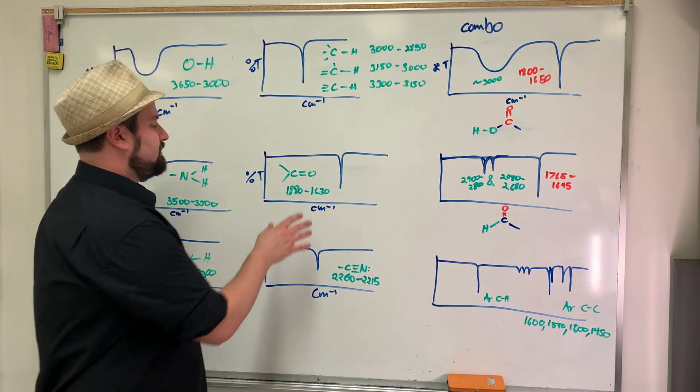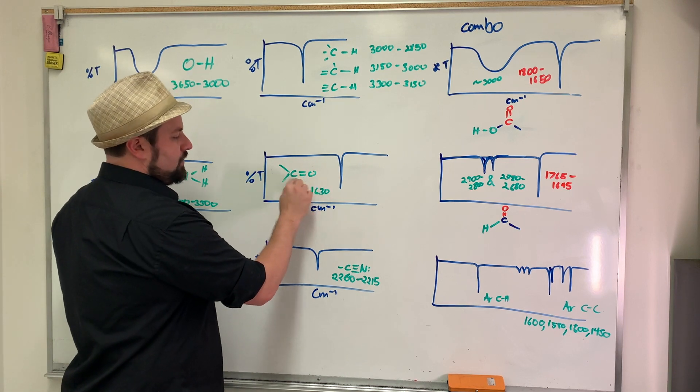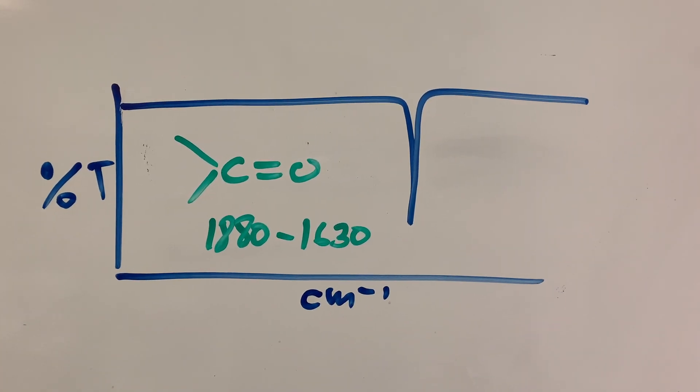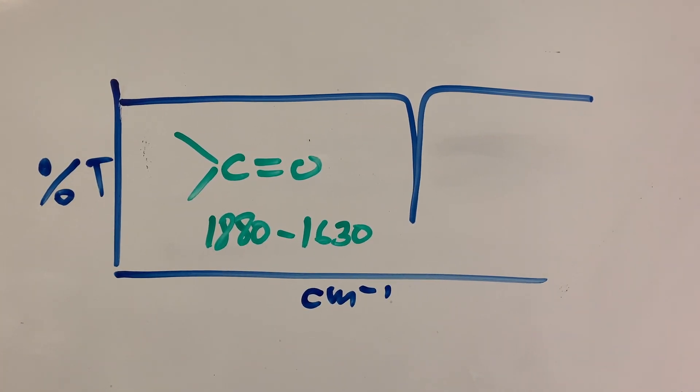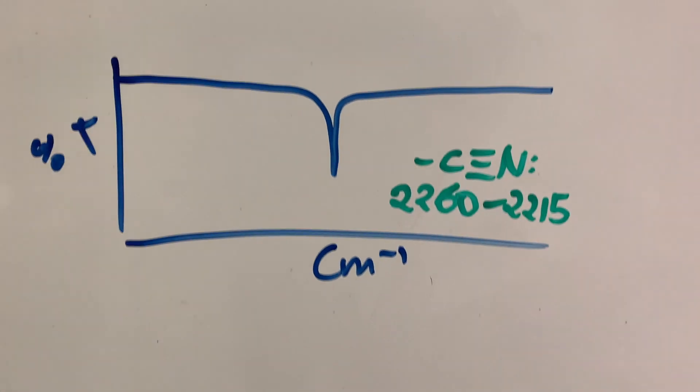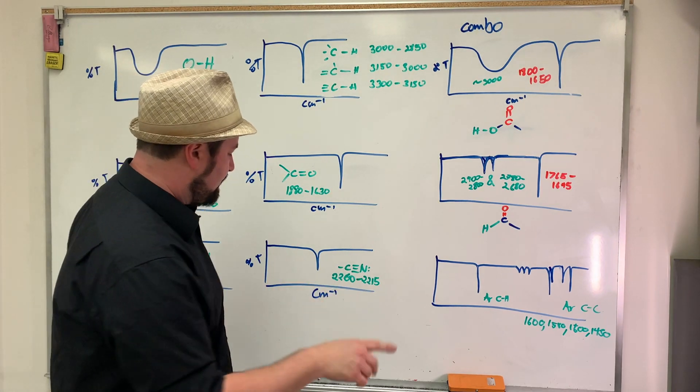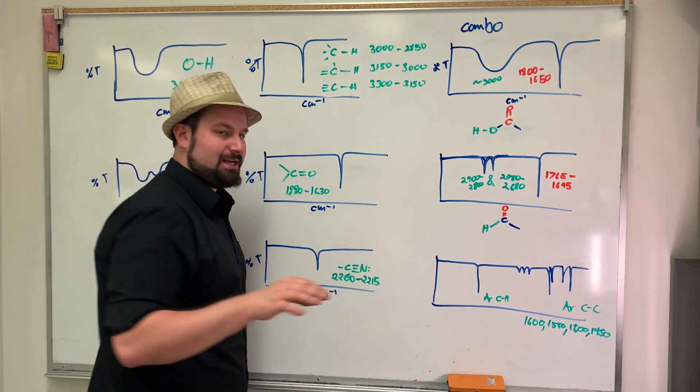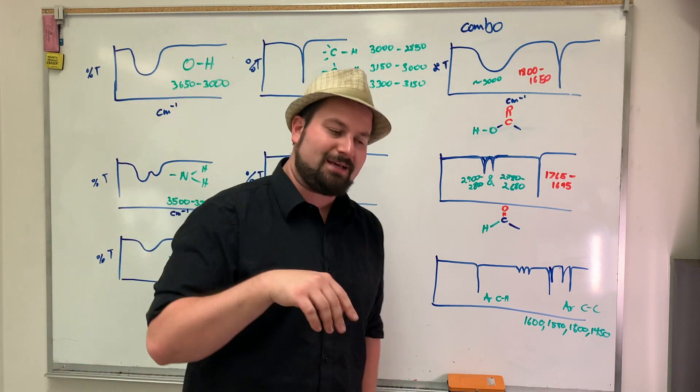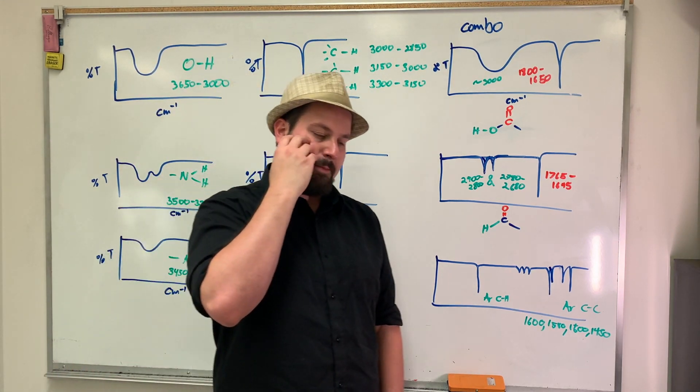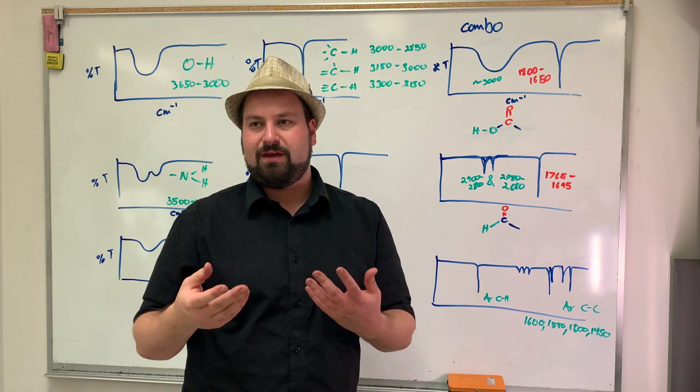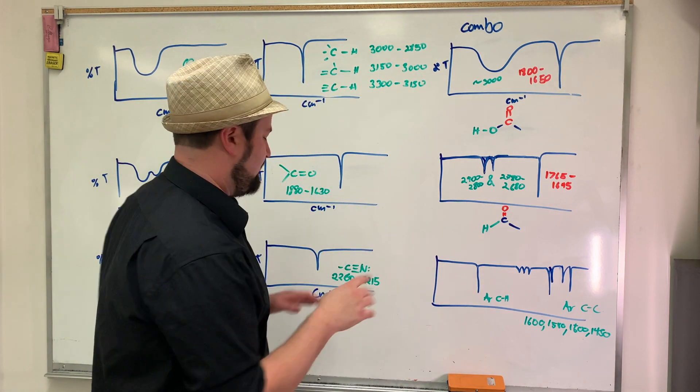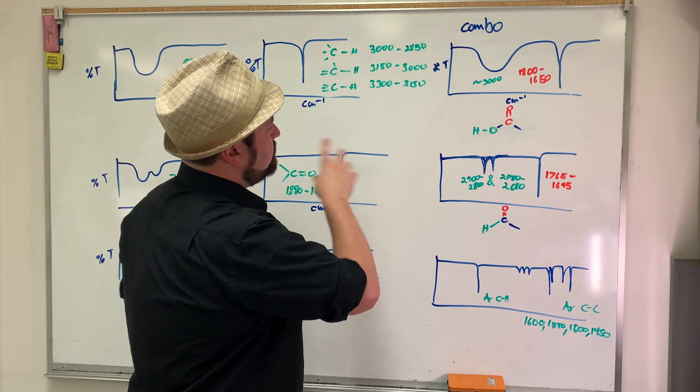Same thing goes for carbonyls. Carbonyls, any C=O double-bonds, and there's quite a variety of those, you're going to see from 1880 to 1630. For nitriles, remember that's a C triple-bond N, you're going to see those in the middle here. That's 2260 to 2215. I'm going to include a link to this on the screen now or in the description down below with all of the information in a PDF with all these numbers ready on them.